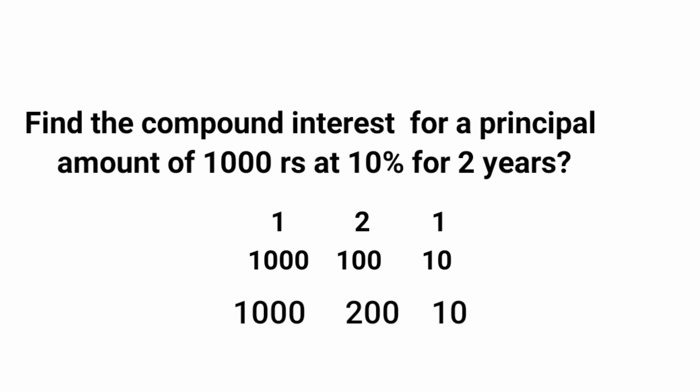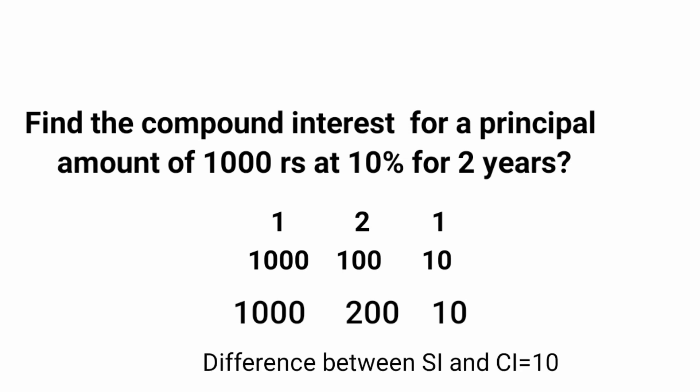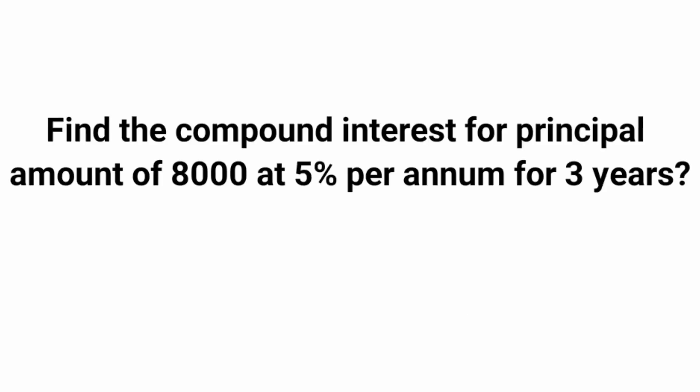If asked to find the difference between simple interest and compound interest for the same principal, rate, and number of years, leave the first two columns and take the values in the remaining columns. Here only one column remains, so the answer is 10. Now let us see one more question.